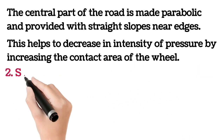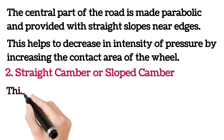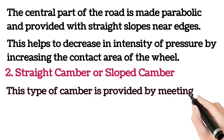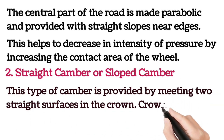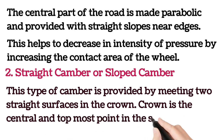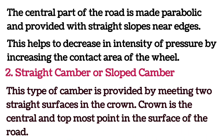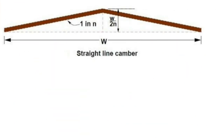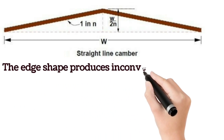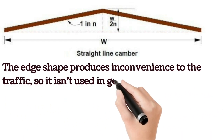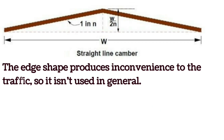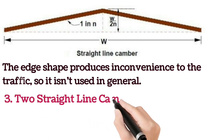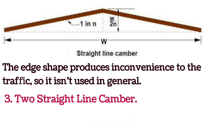Straight camber or sloped camber is provided by meeting two straight surfaces at the crown. The crown is the central and topmost point on the surface of the road. Two straight lines meet at the crown. However, the edge shape produces inconvenience to traffic, so it is not used in general.